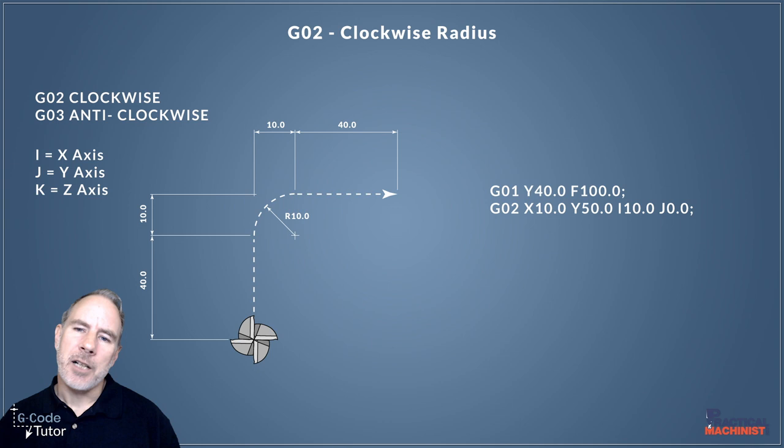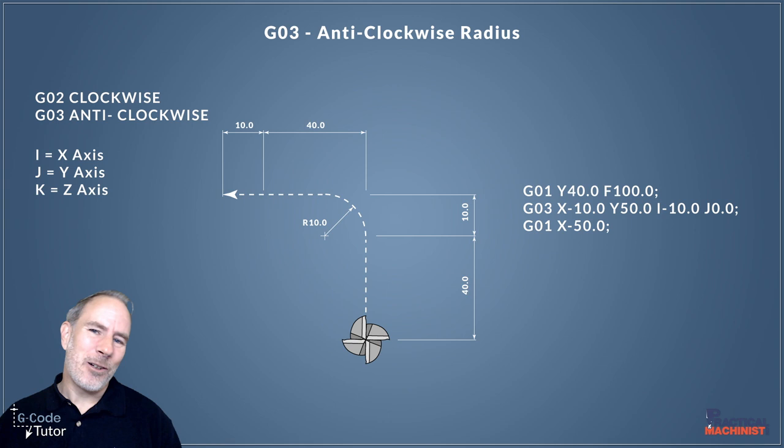Once we've performed our radius, once we've cut around our 10 mil rad there, we then need to move away in X. We're doing that again with G01 and an X dimension. Again, we don't need to add a feed rate because the feed rate is still active from the first line. Of course, that works the same counterclockwise or anticlockwise. It's exactly the same when using G03, just the other direction.